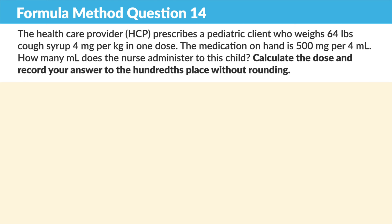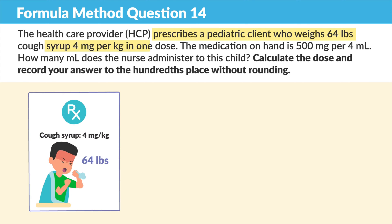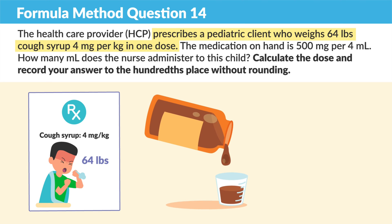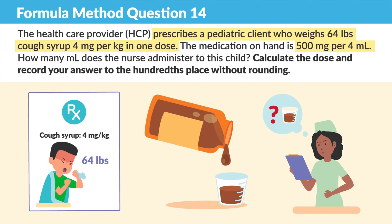Moving on to question 14. The healthcare provider (HCP) prescribes a pediatric client who weighs 64 pounds cough syrup, 4 milligrams per kilogram in one dose. The medication on hand is 500 milligrams per 4 mLs. How many mLs does the nurse administer to the client?